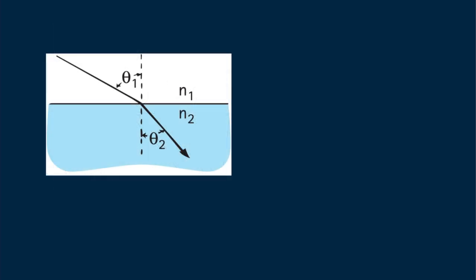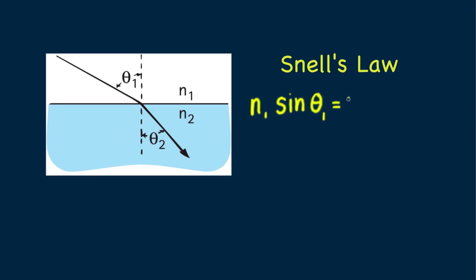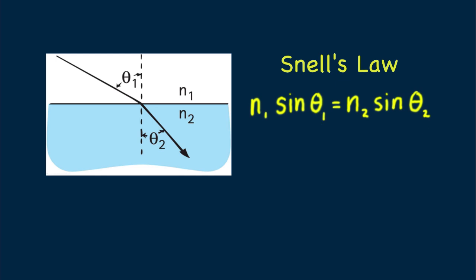The quantitative law of refraction involves a bit of trigonometry and is called Snell's Law, credited to Willebrod Snell, a 17th century Dutch astronomer and mathematician. It's N₁ sin θ₁ = N₂ sin θ₂, where N₁ and N₂ are the indices of refraction of the media on either side of the surface, and θ₁ and θ₂ are the respective angles of incidence and refraction. If you know the two indices of refraction and one of the angles, you can find the other. Or if you know both angles and one index, you can find the other index. Perhaps in the lab part of your physics course you can play with Snell's Law.